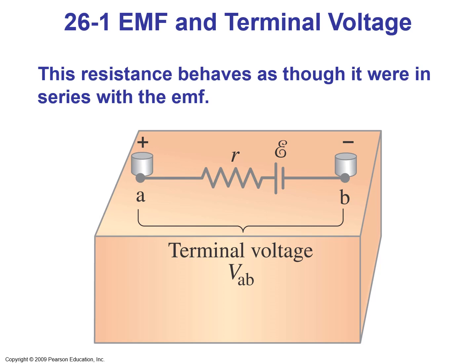A plus sign and a minus sign indicate the two terminals of the battery. But inside this battery, we have the ideal EMF voltage of the battery and the internal resistance R of the battery, which reduces the actual voltage of the battery.